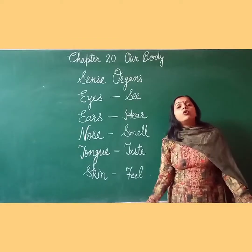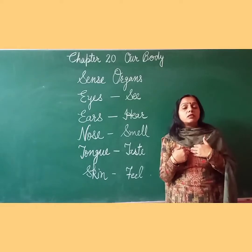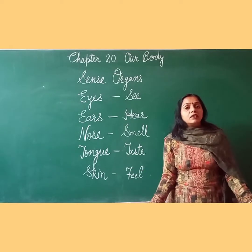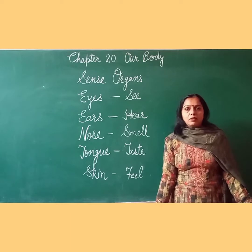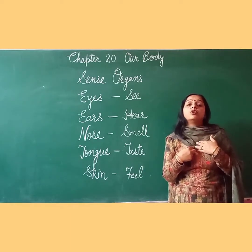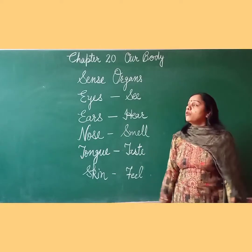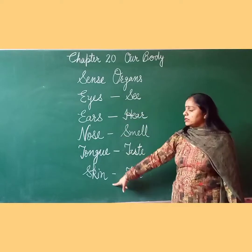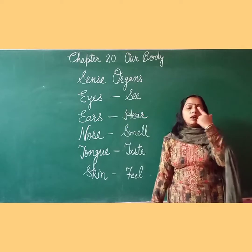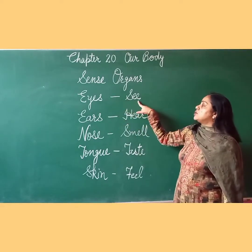How do we come to know what is happening around us? Our body parts do this. There are five sense organs. Number one — eyes. Our eyes help us to see.